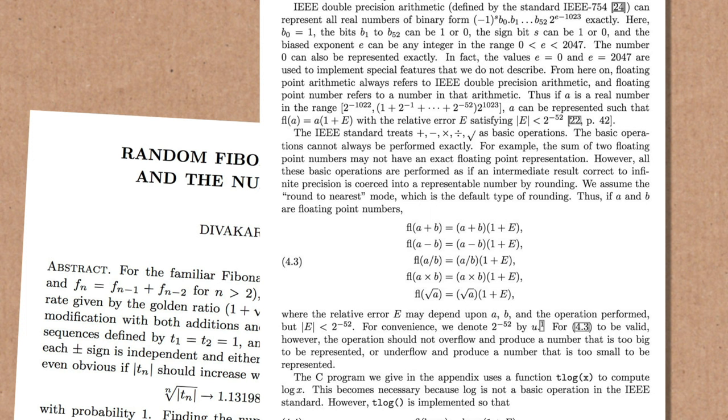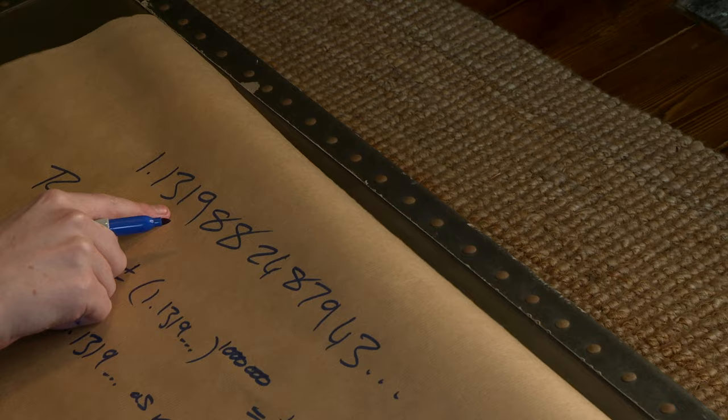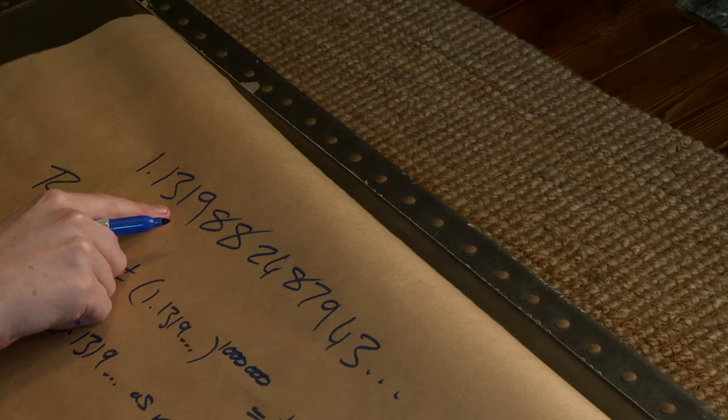Proper advanced maths, proper advanced computing, but what they did calculate was this part of it, 1.13198824, and that's as far as they could go, because it's really hard to calculate. And that was 20 years ago, and in the 20 years since, we've worked out five more digits, and that's as far as we've got.